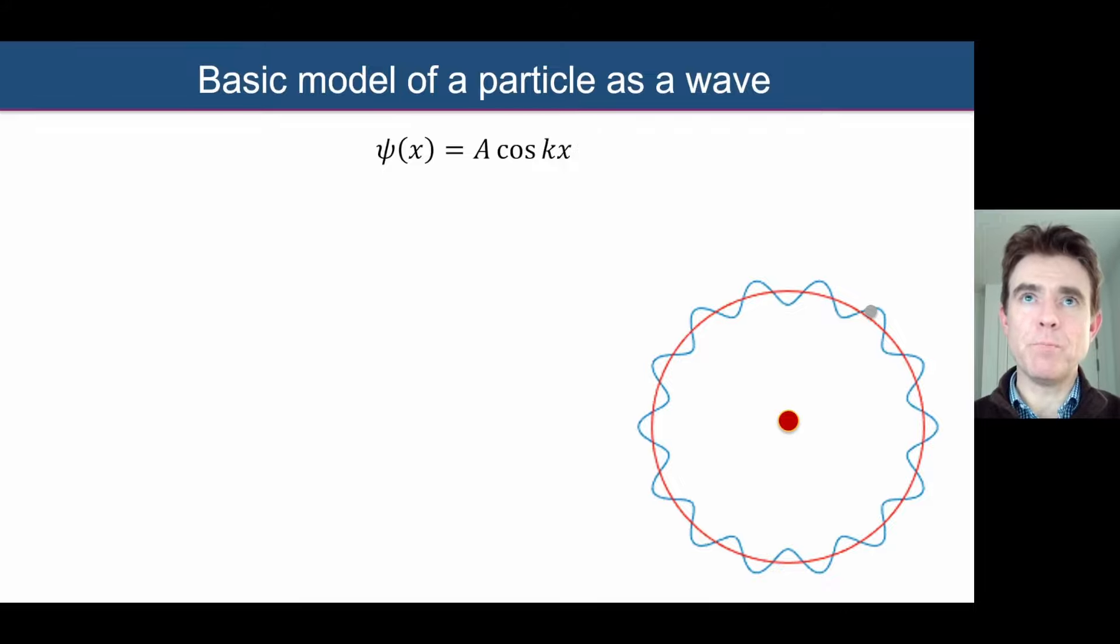Let's start off then with a basic model of an electron as a wave. So here then we have a proton, a hydrogen atom, with an electron orbiting the proton, and normally we consider it as a particle, but now we're going to consider this blue waveform as a cosine function, describing the electron as a wave function, Psi, as a function of position X around that circular orbit. We've got amplitude A, and then we've got this factor K here, which we're going to be calling the spatial frequency or the angular wave number.